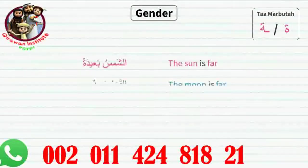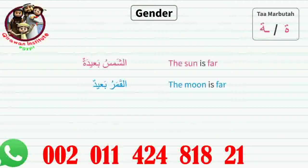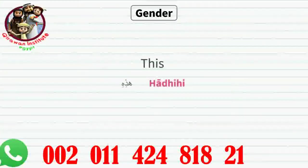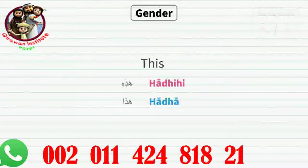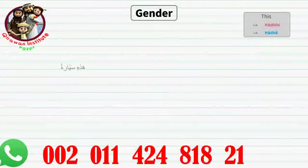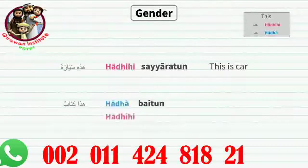But look at the following example: 'the sun is far' and 'the moon is far.' Although sun does not have a ta marbuta at the end, sun is feminine and moon is masculine. To use the correct adjective gender, you must know the noun gender. So when we say 'this is a car,' we use 'hadhi' since the car is feminine. When we say 'this is a house,' we use the masculine 'hadha' since house is masculine.